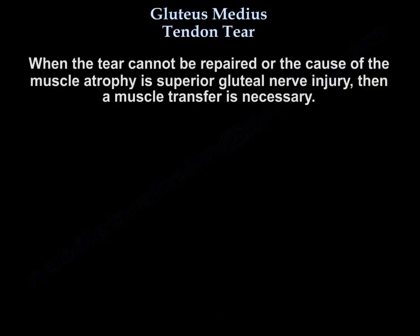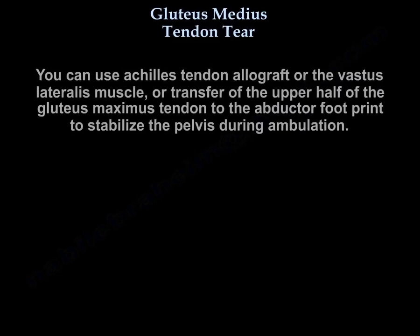When the tear cannot be repaired, or when the cause of muscle atrophy is superior gluteal nerve injury, a muscle transfer is necessary. Options include Achilles tendon allograft, the vastus lateralis muscle, or transfer of the upper half of the gluteus maximus tendon to the abductor footprint to stabilize the pelvis during ambulation.